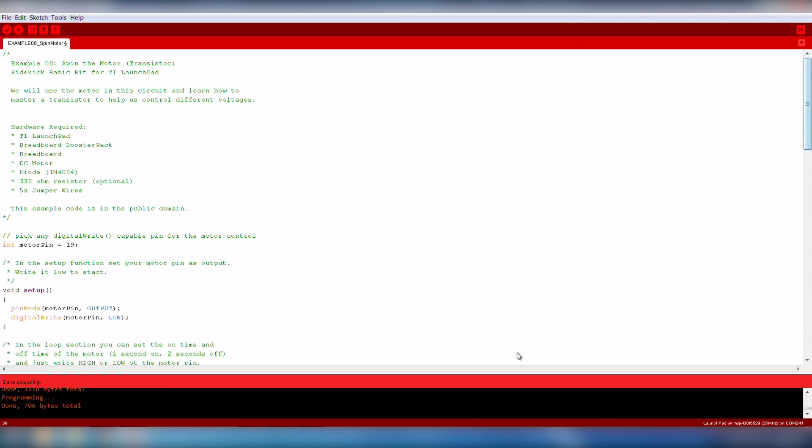This code will spin the motor and turn it off periodically. You can learn more about the concepts in the circuit online under the Example page.